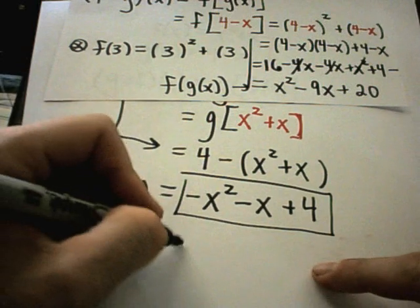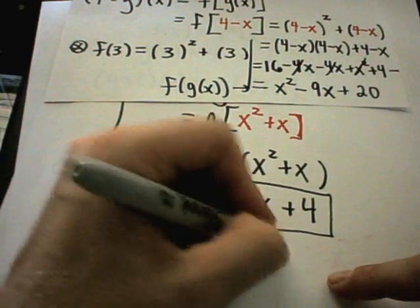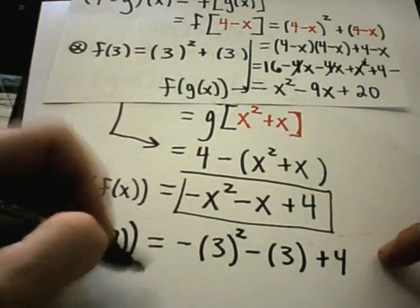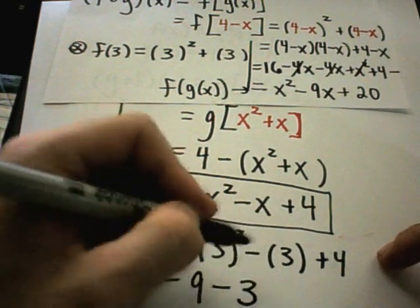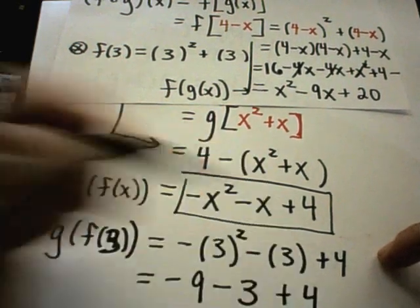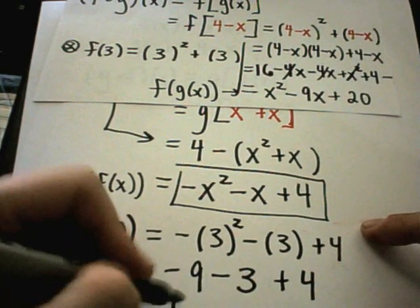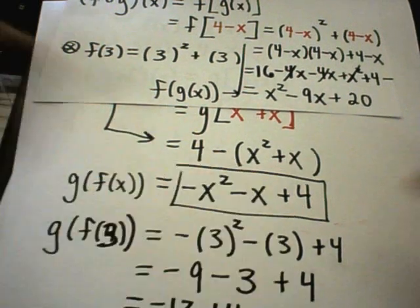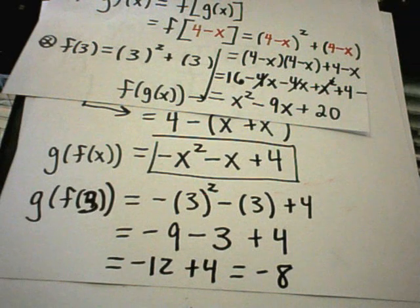Now it says you're just replacing the x's with 3's. We get 3 squared minus 3 plus 4. You square the 3 first so I'll get 9, but then it'll become negative 9. I've got minus 3 and plus 4. Negative 9 minus 3 is negative 12, plus 4 is negative 8.